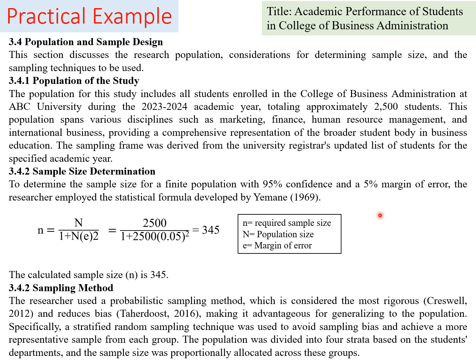We need to know the number of students per department — how many of the 2,500 are in marketing, finance, human resource management, and international business. Based on those proportions, we allocate the 345 sample size proportionally across the four groups. This is stratified random sampling technique.